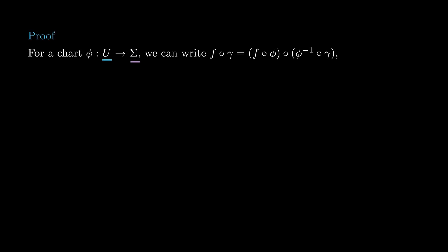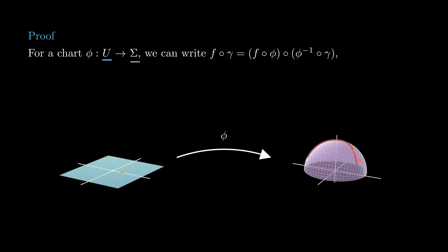To prove this, take a chart phi around p. Then f composed with gamma can be factored through phi. That is, if we set alpha to be phi inverse composed with gamma, then f composed with gamma is f composed with phi composed with alpha.